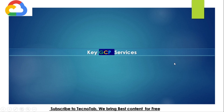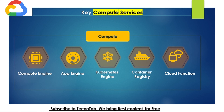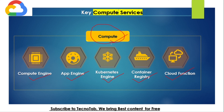The first key GCP service is compute. Compute is the foundational aspect of GCP and Google offers many services in this space: Compute Engine provides Infrastructure as a Service, App Engine provides Platform as a Service, Kubernetes Engine provides Container as a Service, and Cloud Functions provides Function as a Service. There is also Cloud Registry for managing Docker container images. We have a dedicated section covering all of these compute services.